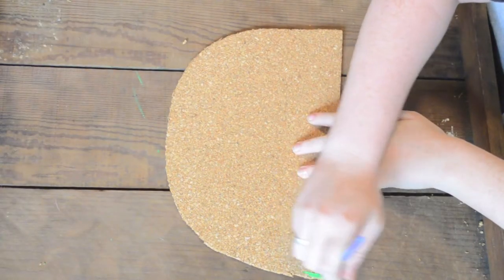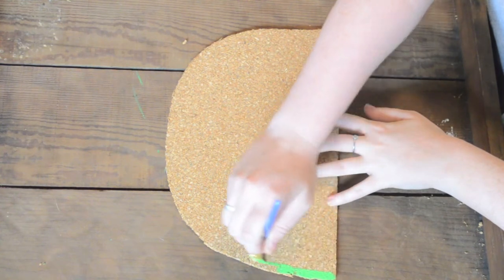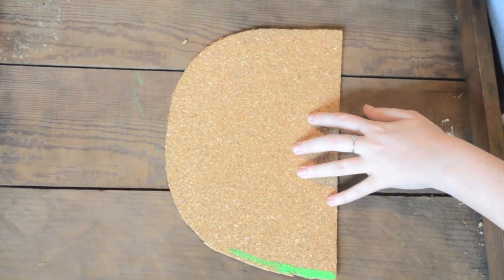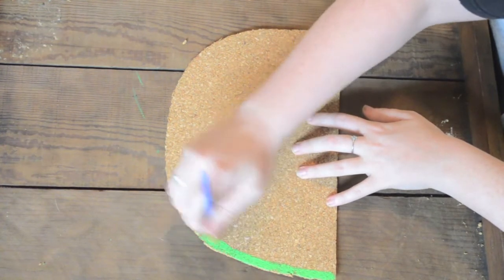Next, for the watermelon, I just cut out this D shape and then went around the border of it with some green paint. Then you'll fill it in with some pink paint and then use some black paint to add in the seeds.